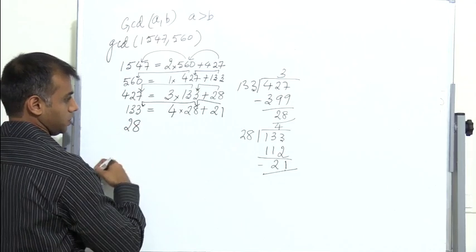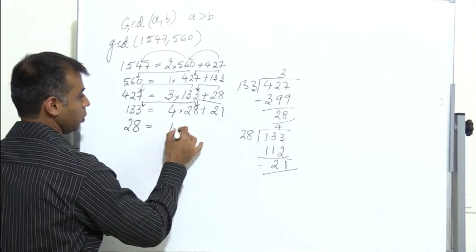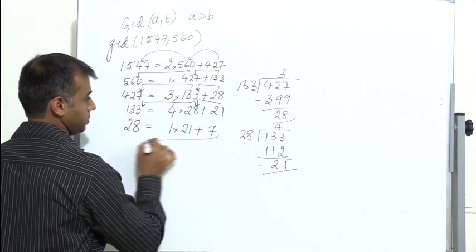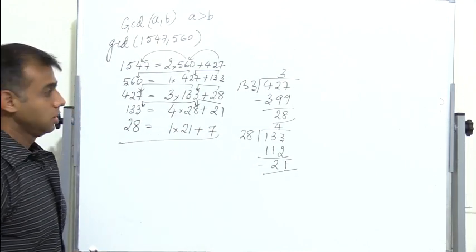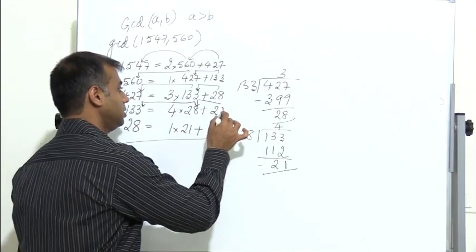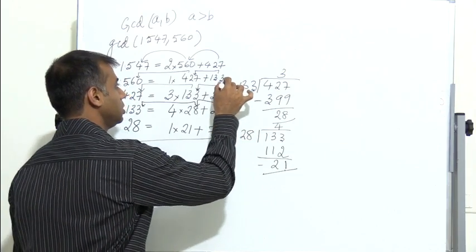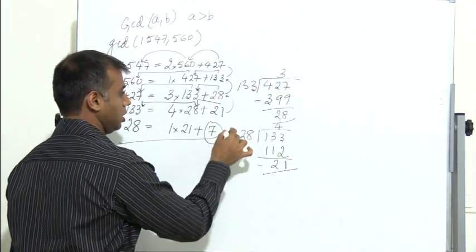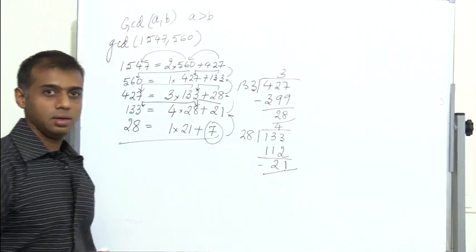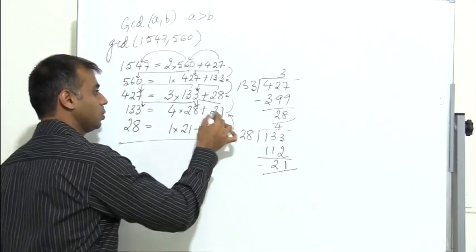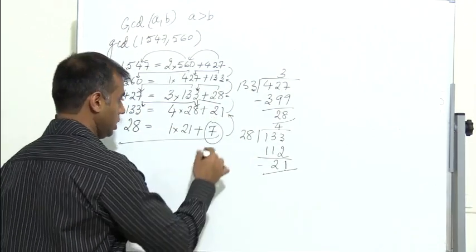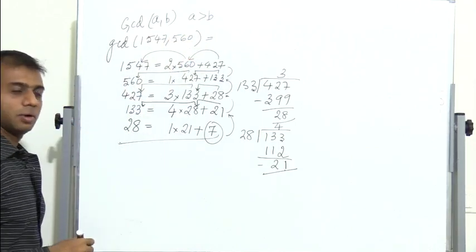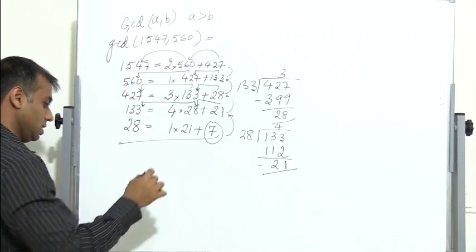Next, 28 equals 1 into 21 plus 7. In all previous steps, the current remainder did not divide the previous remainder. But here, 7 divides 21. Therefore, the GCD of 1547 and 560 is 7.